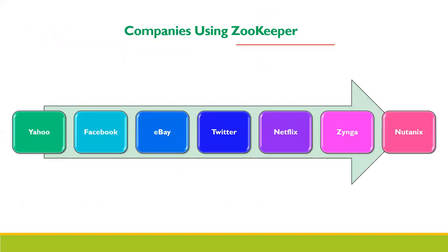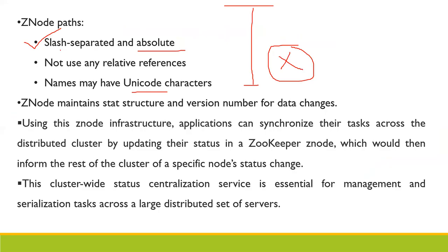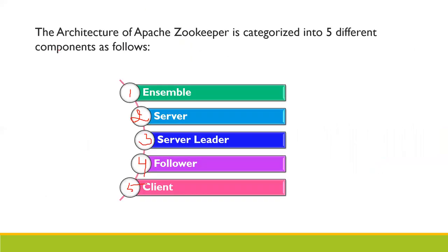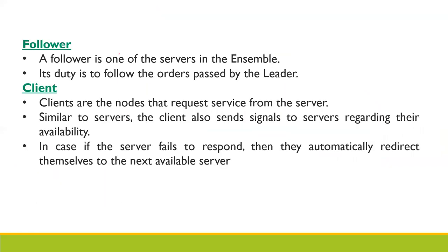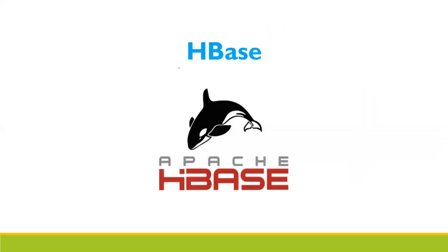Companies that use Zookeeper include Yahoo, Facebook, eBay, Twitter, Netflix, Zynga, and Nutanix. Zookeeper works on distributed processing, stores information in local log files, and uses client-server architecture for the process of synchronization.